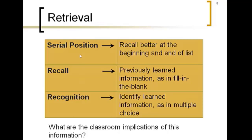Coming back to the serial position effect: recall is better at the beginning and the end of a list. We tend to remember things at the beginning and the end but lose the stuff in the middle. If you listen to a list of words and write them down after, people typically remember the first few items and the last few items, missing things in the middle. The reason is that those first few words get rehearsed several times. But at a certain point you've heard so many words that you can't rehearse them all, your brain gives up, and you lose the things in the middle.